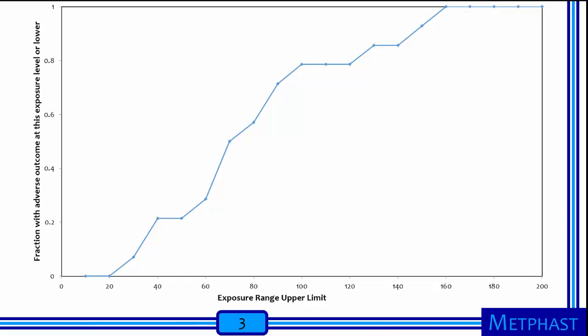Most animal studies use the median lethal dose, otherwise known as the LD50, which is the dose at which 50% of the animal subjects experience death. Using a dose response curve, you can determine the exposure at which 50% of participants experience an adverse outcome for your entire group's data. In order to determine this, locate 0.5 on the vertical axis and draw a horizontal line from that point to the curve, then find where a vertical line drawn downward from this point intersects with the horizontal axis. In this example, 70 is the approximate number of repetitions at which 50% of the participants experience the adverse outcome.